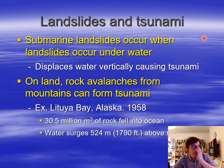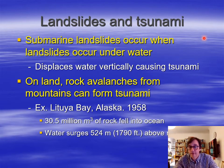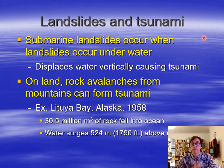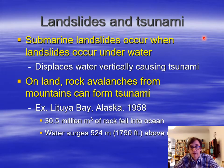Some tsunamis are caused — not as commonly — by landslides. Submarine landslides occur when landslides essentially occur underwater, hence submarine, and they displace the water vertically. If it's a large enough landslide, they will cause a tsunami. Also, on land, rock avalanches from mountains can also form tsunamis; it doesn't have to be a submarine landslide.